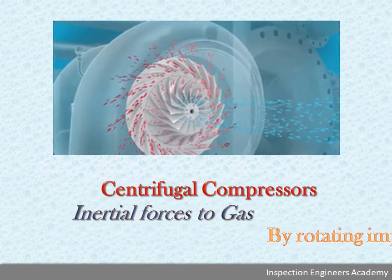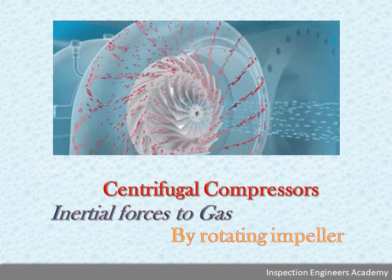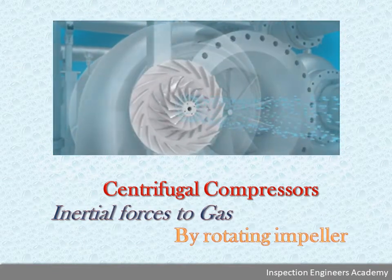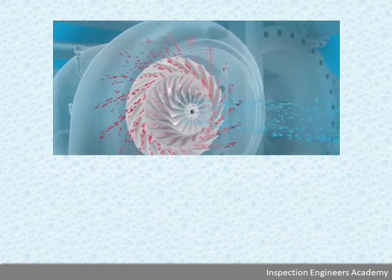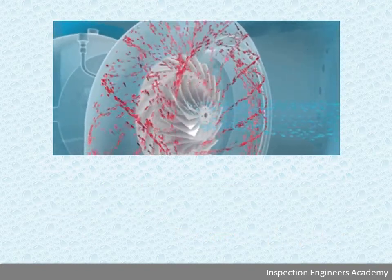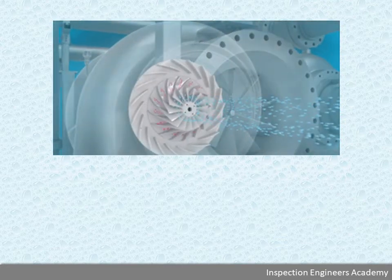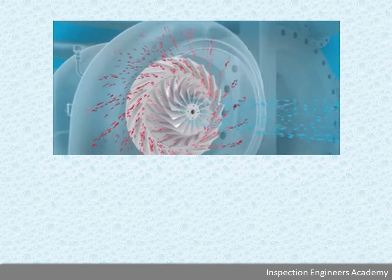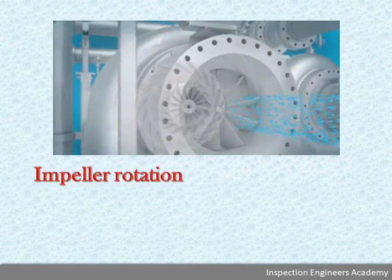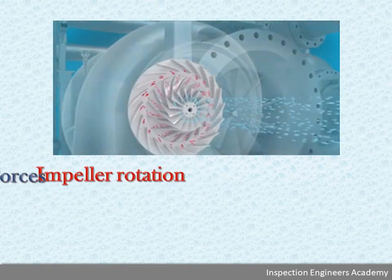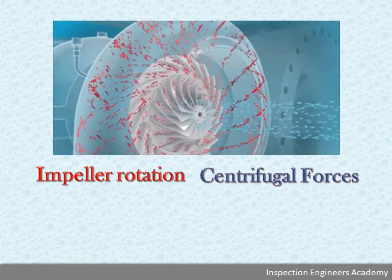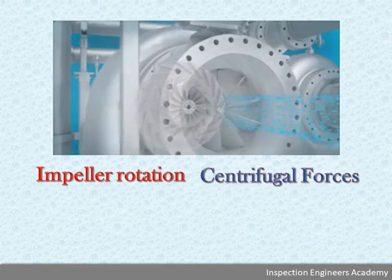The centrifugal compressor is a dynamic machine that achieves compression by applying inertial forces to the gas by means of rotating impellers. The shaft is rotated by means of a driver, and consequently the fitted impeller is rotated. Impeller rotation causes gas rotation and movement, then generates centrifugal forces, by which the gas is sucked through the inlet nozzle in the axial direction.